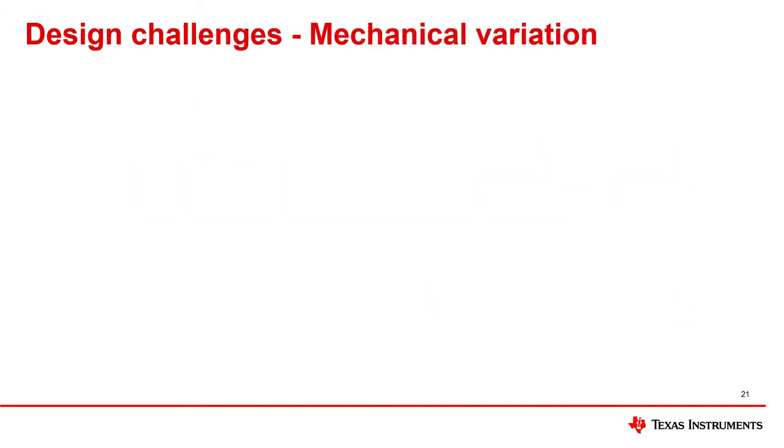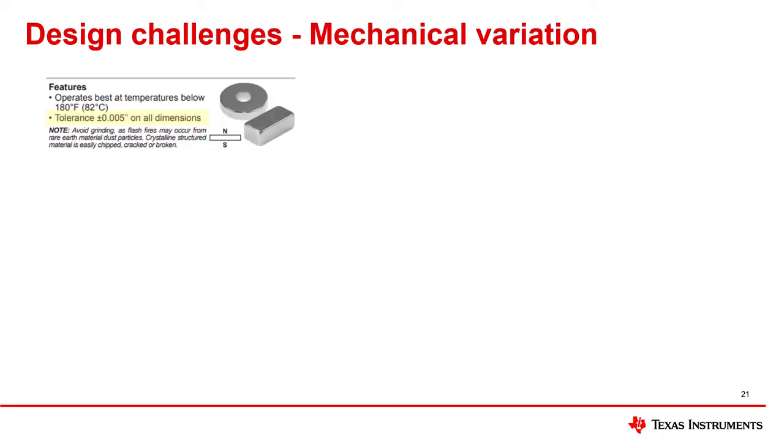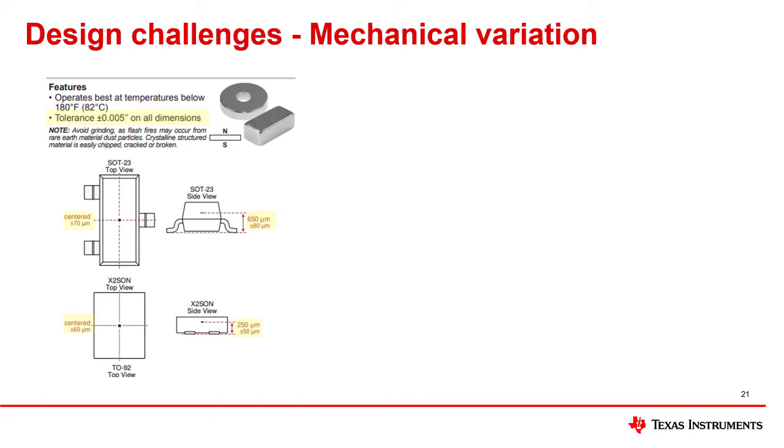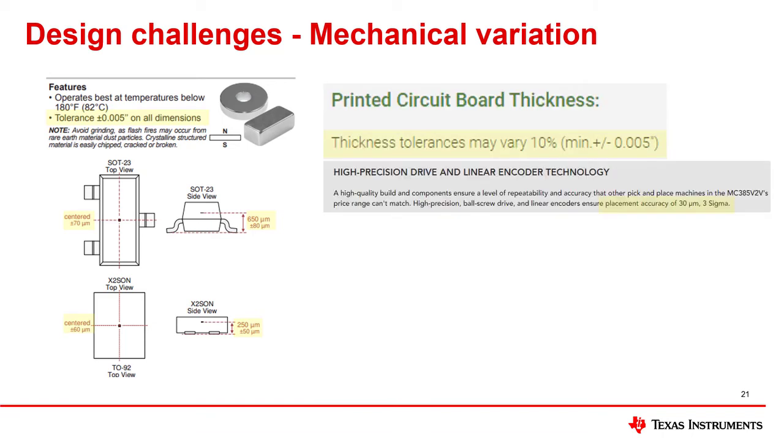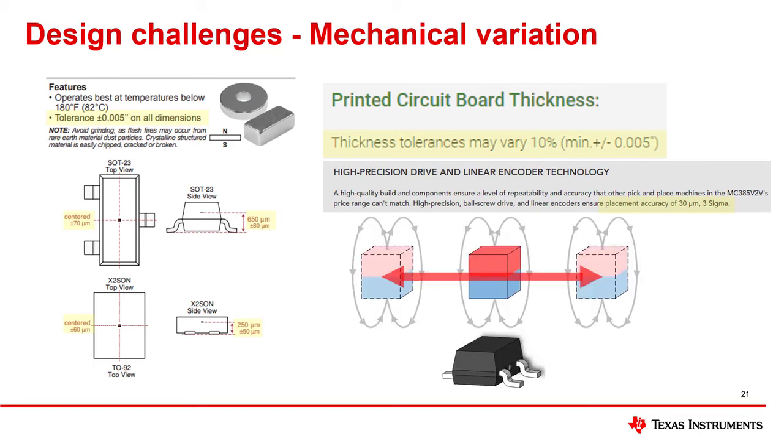As the design involves more than just the sensor, we can anticipate that there will also be variation due to tolerances in the manufacturing of the magnet, the Hall element placement within the device package, the Hall sensor PCB, the system fixture, and the physical placement of the magnet.